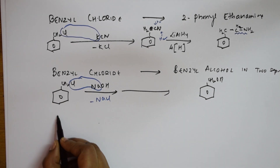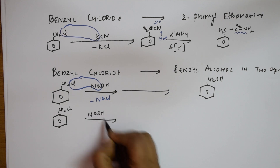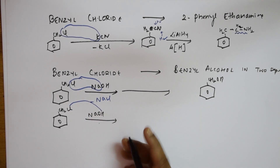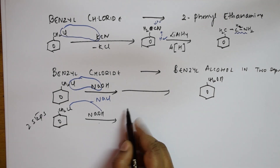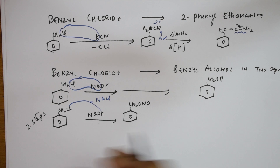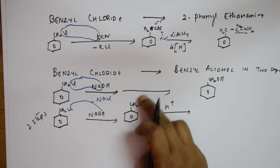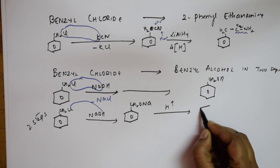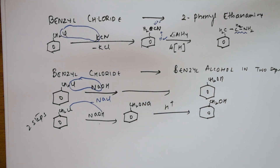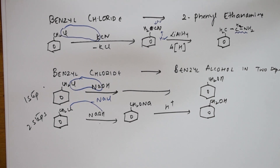But if the exam paper asks you to do it in two steps: step one — add NaOH to benzyl chloride; HCl comes out and you get the sodium alkoxide OCH2ONa. Step two — use acidic medium, add HCl; NaCl comes out and H+ goes in, giving CH2OH — benzyl alcohol. This is the two-step process. So the one-step uses NaOH directly; the two-step goes through the sodium alkoxide intermediate.